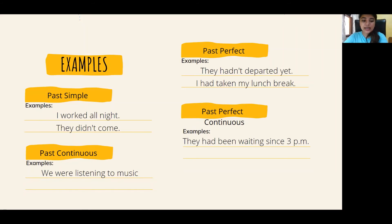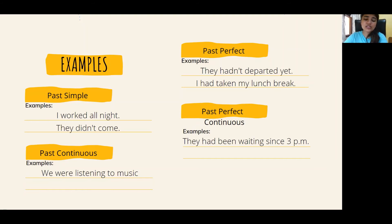When telling a story about the past and we want to show that one action happened before another, we use the past perfect for the earlier action — the one further in the past. Then we use simple past tense for the action that happened closer to the present. For example: 'I had taken my lunch break when I saw the delivery man.' So 'I had taken my lunch break' is past perfect, and 'I saw the delivery man' is simple past. This is more common in writing but is used in speaking as well.